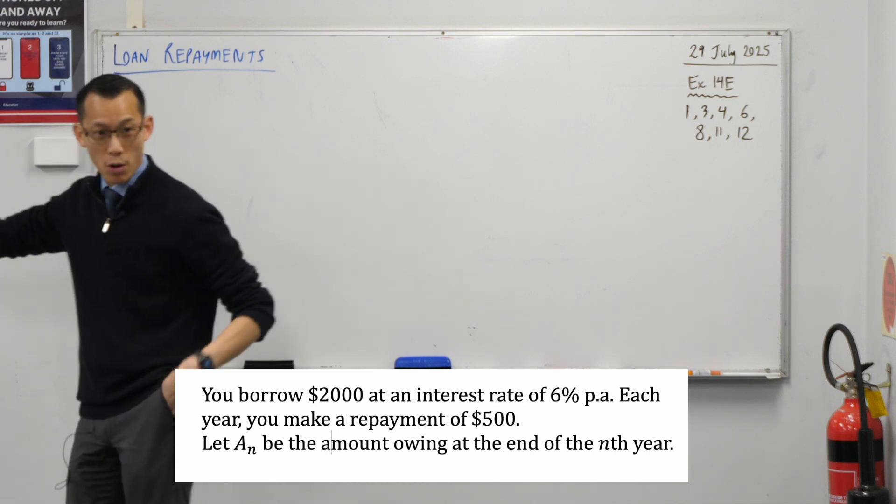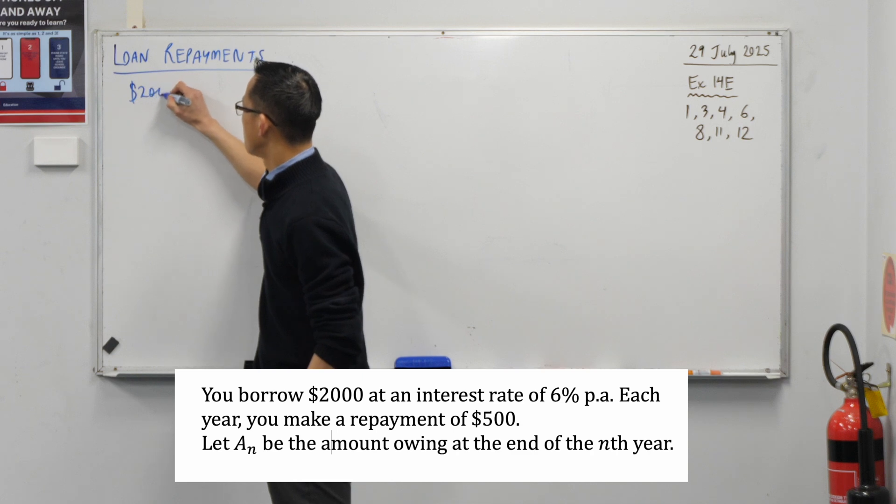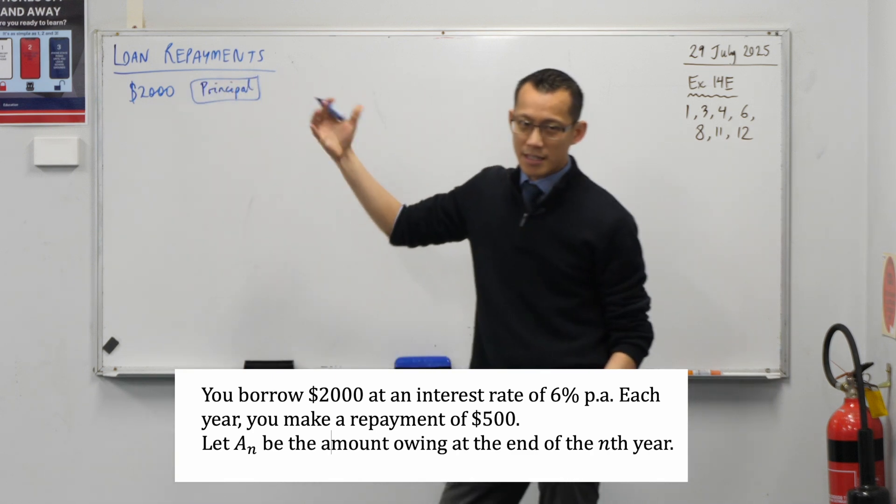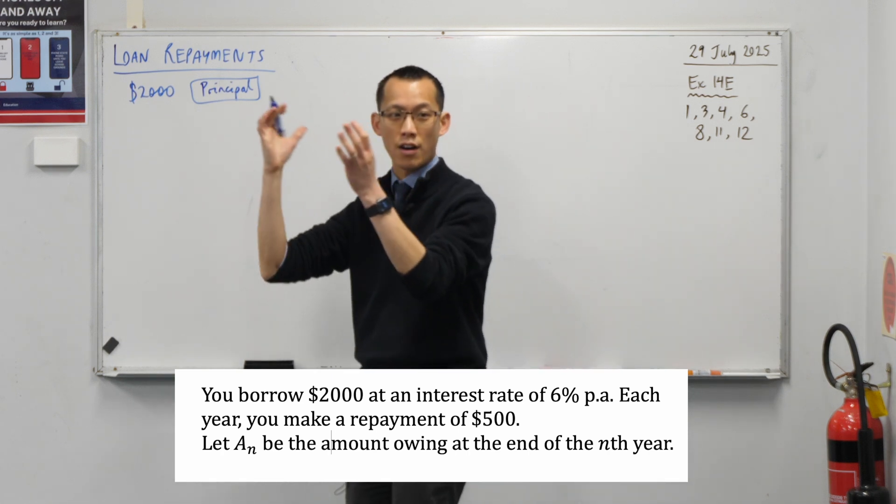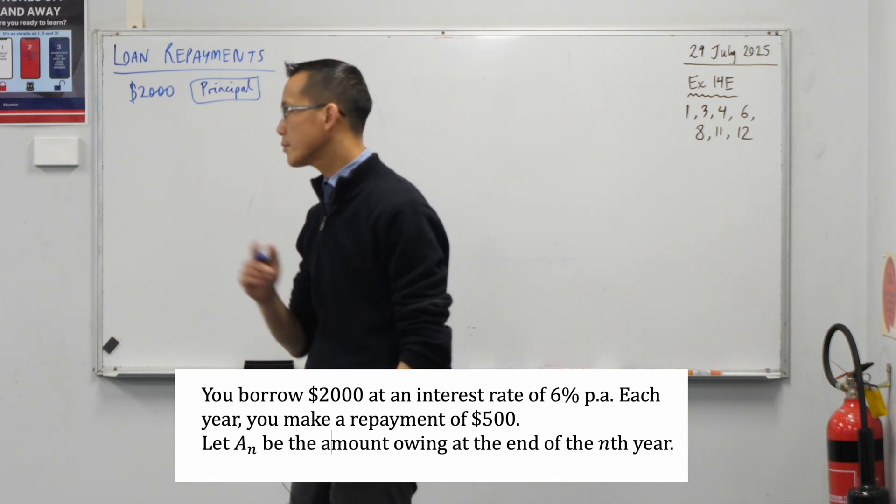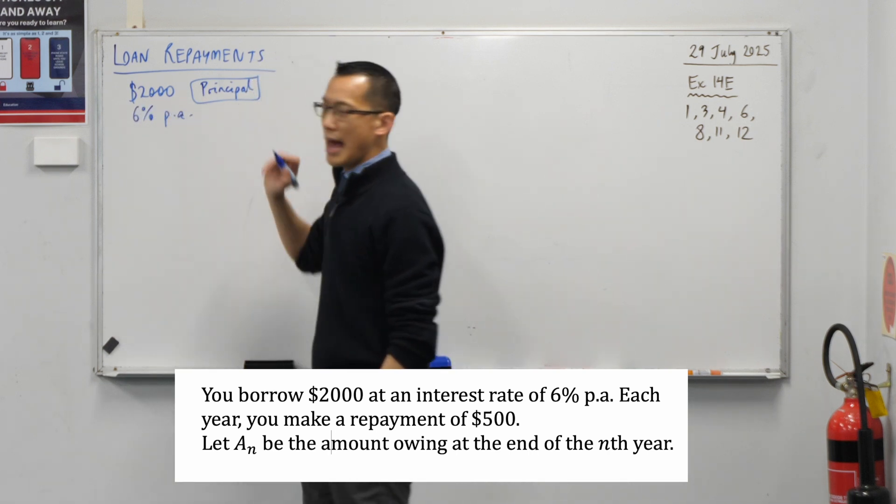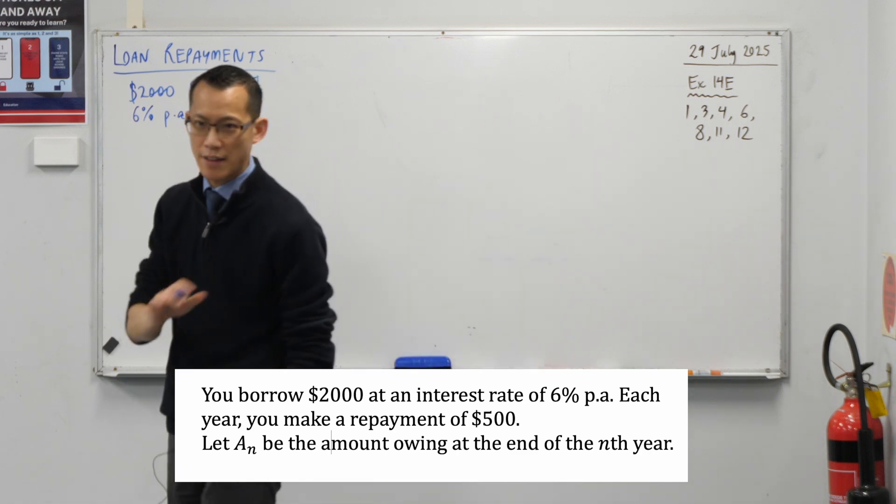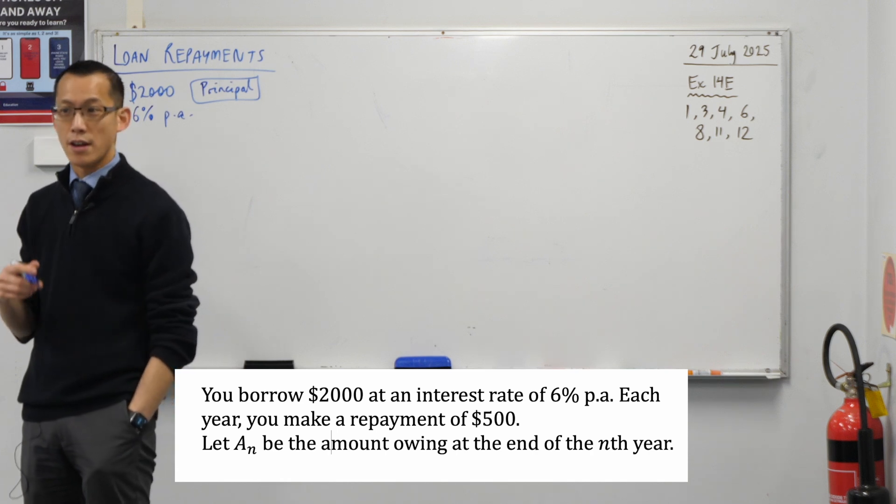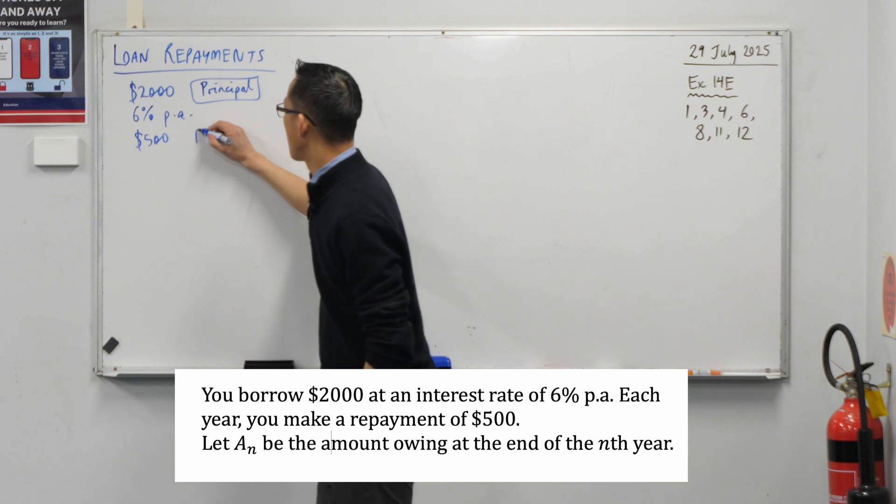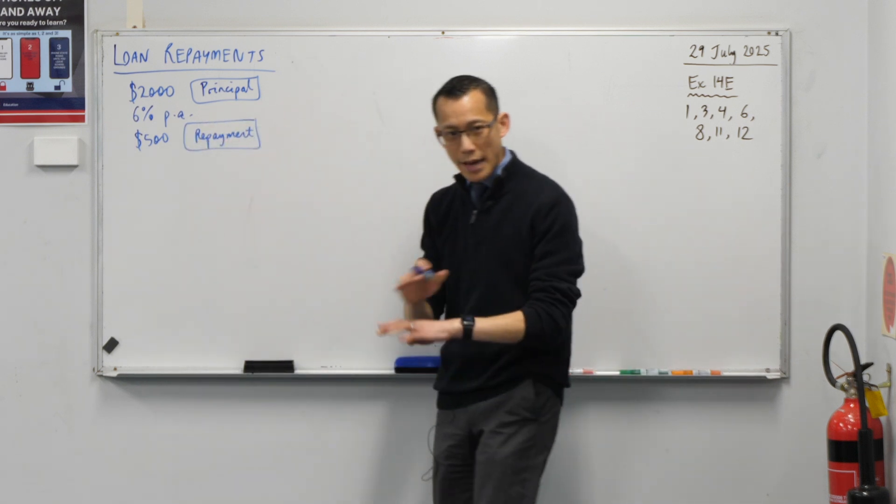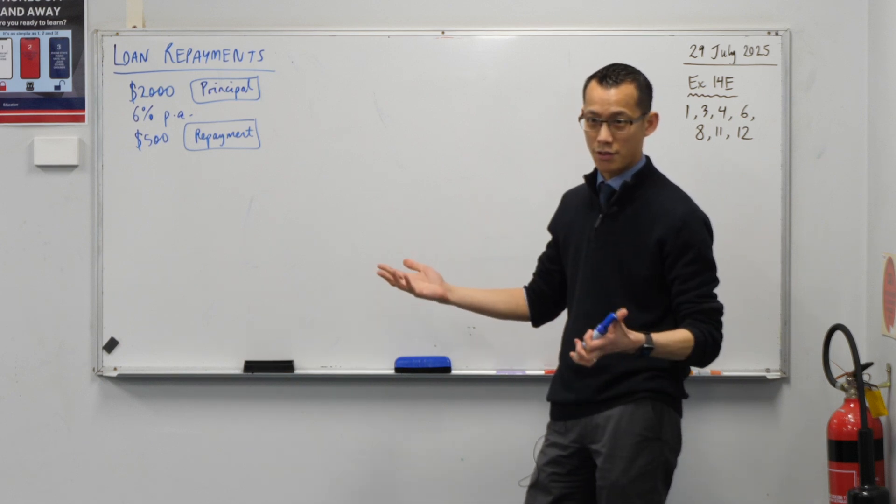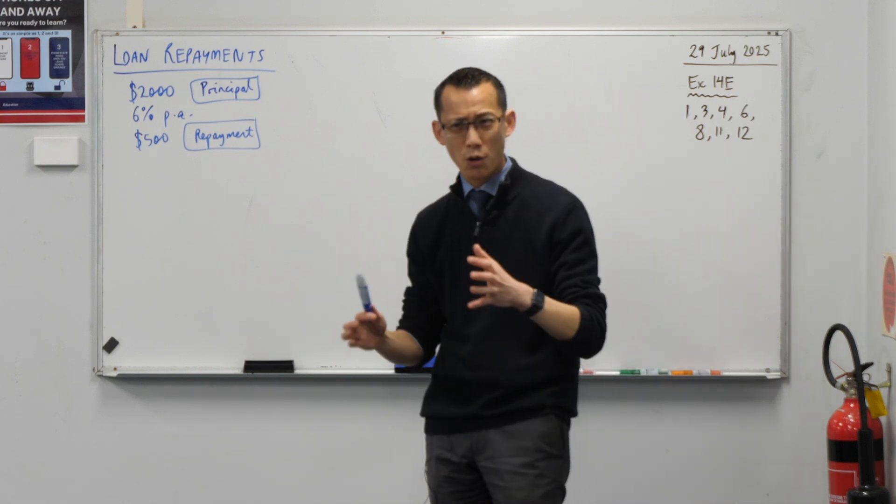We're borrowing—let's jot down some important information. Two thousand dollars is the principle, which is a word that means different things in different contexts. Here it's what we're borrowing, as opposed to what we start off investing. Since we're in a repayment situation, I've given us an interest rate of 6% per annum. In the absence of any information about compounding period, what do you assume? Annually, per year. Each year you make a repayment of $500. If we had no interest, how long would this take to pay off? Four years—four times $500, simple.